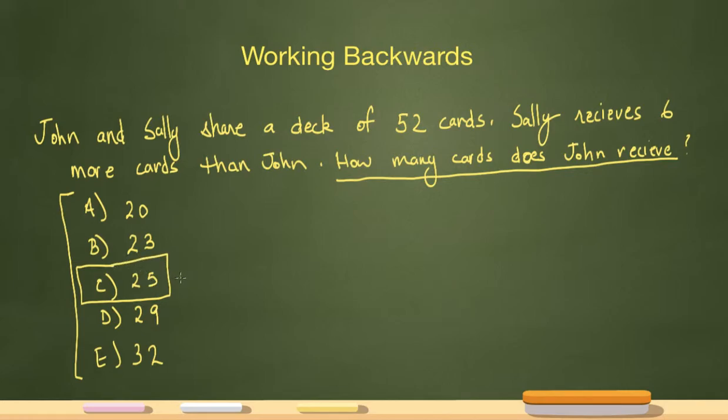So we're saying at this point that 25 is the number of cards that John receives. So if John receives 25, you know that Sally receives six more cards. That means that Sally must have 31 cards. We also know that the deck of cards has 52 cards. So it's 31 plus 25 equals 52. Let's test it out.